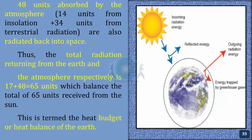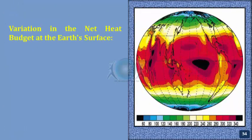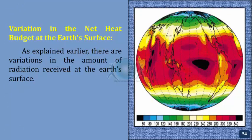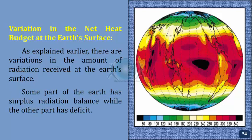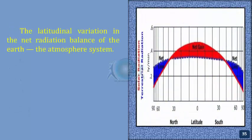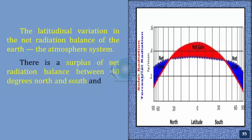This is termed as the heat budget or heat balance of the Earth. This explains why the Earth neither warms up nor cools down despite the huge transfer of heat that takes place. Variation in the net heat budget at the Earth's surface — there are variations in the amount of radiation received. Some parts have a surplus radiation balance while others have a deficit. The surplus heat energy from the tropics is redistributed polewards, so the tropics do not get progressively heated nor do high latitudes get permanently frozen.